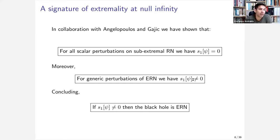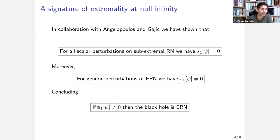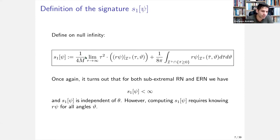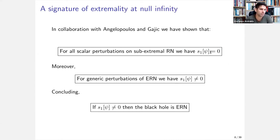If it turns out that we have a ψ for which S₁ is non-zero, we can immediately conclude that the background cannot be sub-extremal — it must be extremal. Indeed, for generic perturbations of extremal Reissner-Nordström, S₁ is non-zero. So we have a quantity defined for all solutions to the wave equation — requiring only the mass — that allows us to conclude from measurements whether the background geometry is extremal or sub-extremal.